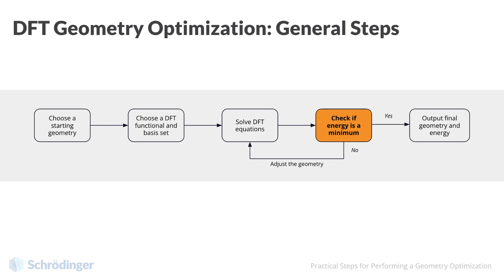Fourth, check if the energy is at the minimum. If not, adjust the geometry and return to step 3. If the energy is a minimum, proceed to step 5: output the final geometry and energy.